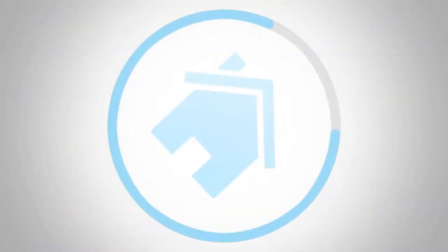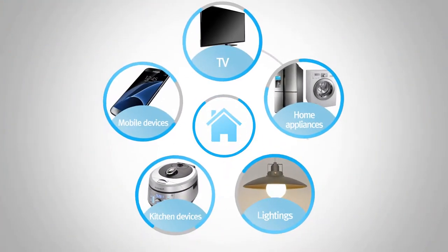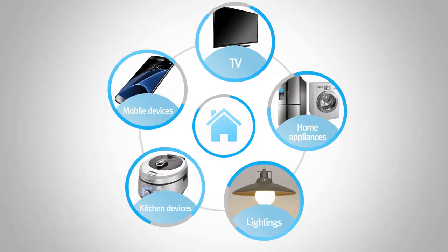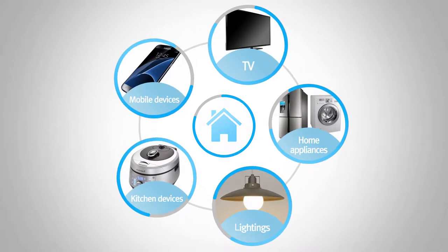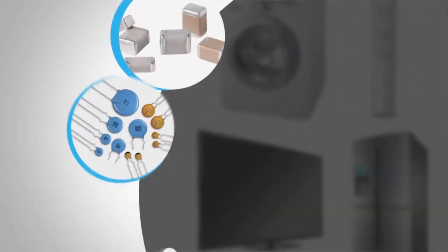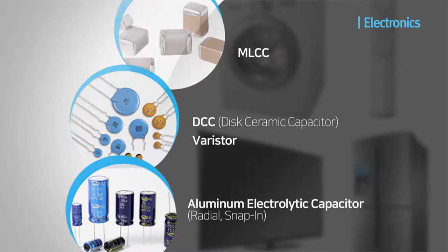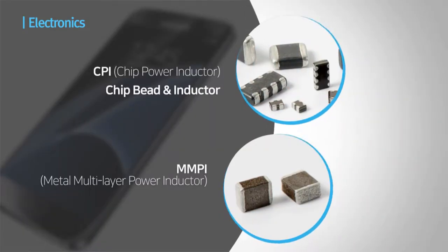For home appliances, lighting, kitchen devices, mobile devices, and other electronics used in our daily lives, Samhua produces capacitors, inductors, filters, and other components that are used in the production of electronic goods.